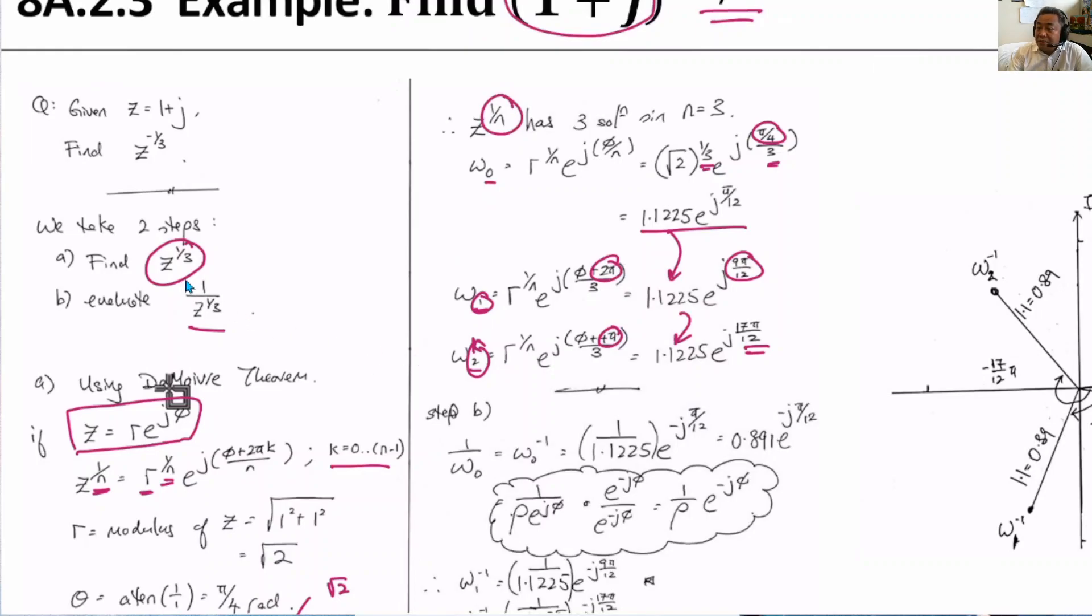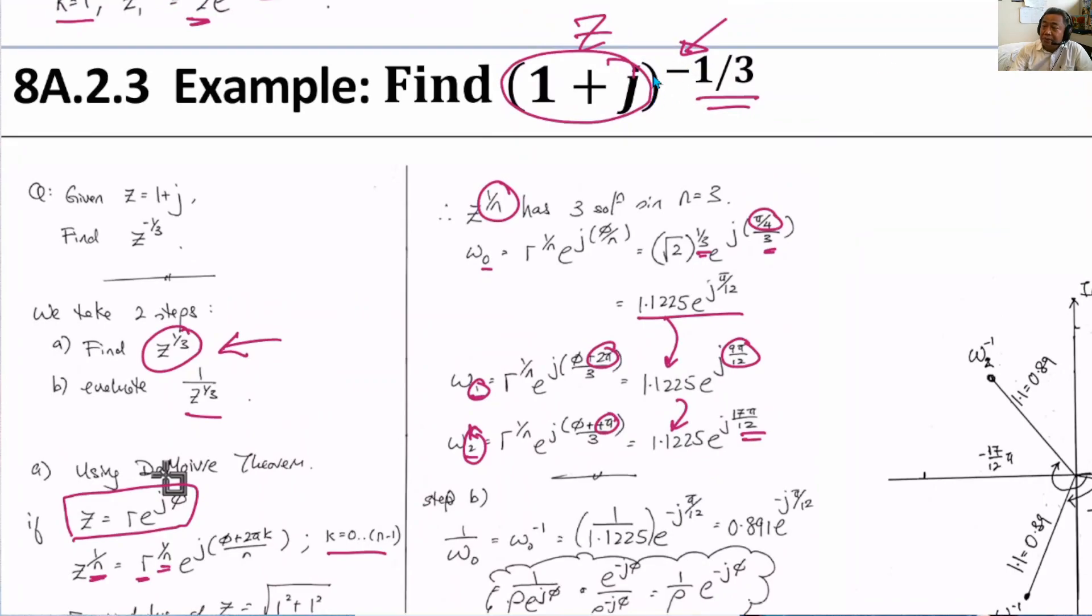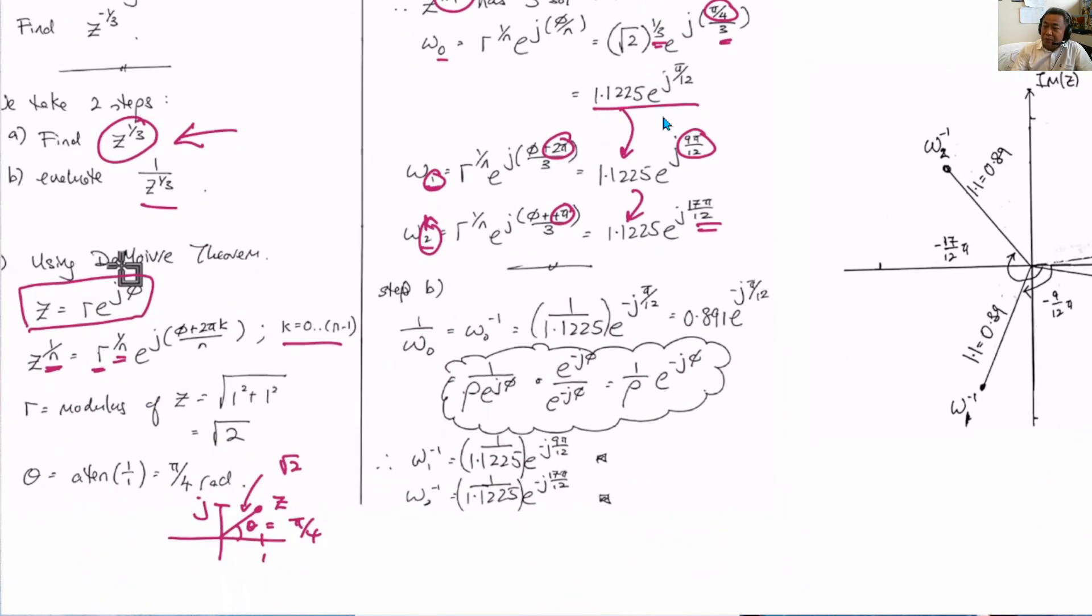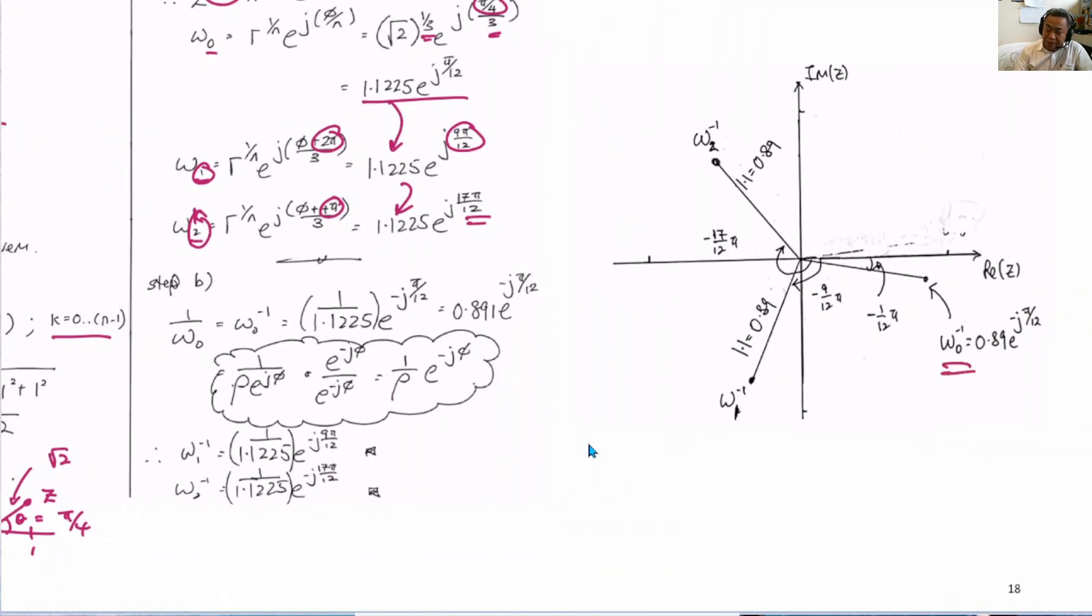And because this is nothing but z to the power of 1/3, we haven't got 1 over z to the power of 1/3 yet, which is what we want. This is the problem we want. So what we need to do is we take reciprocal of each of these solutions, 1 over w0, 1 over w1, 1 over w2. You can work it out. This is the answer. So I plot w0^(-1), w1^(-1), w2^(-1).